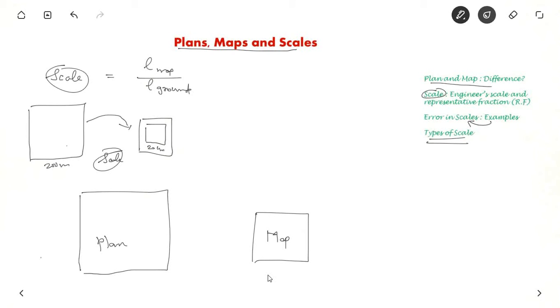A map is only for viewing purposes, so even if it is small there is no issue. But a plan — you have to plan many things in it, so it should be of large scale.